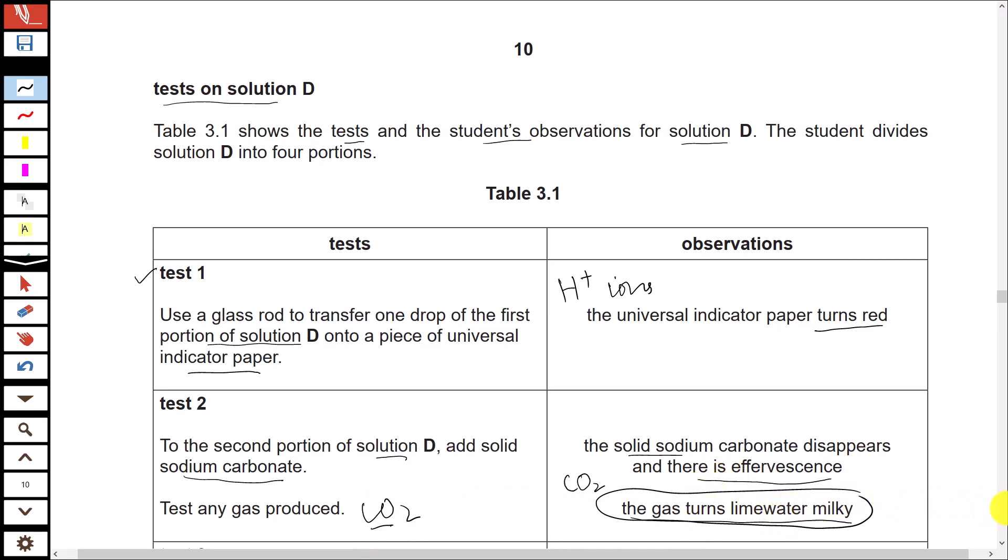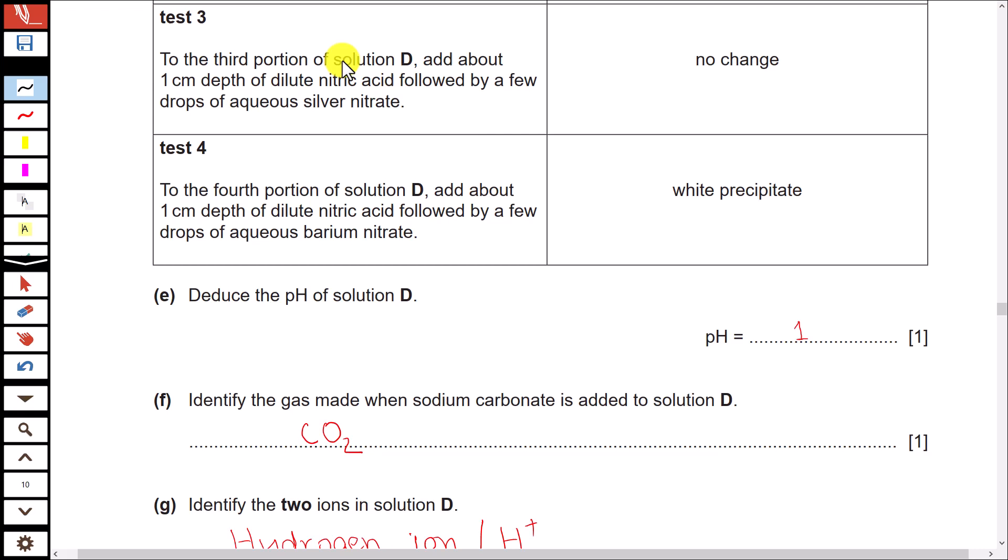Test 3: To the third portion, add about one centimeter depth of nitric acid followed by drops of aqueous silver nitrate. This is the test for halides. Observation is no change; it means there is no halide including chloride, bromide, or iodide.